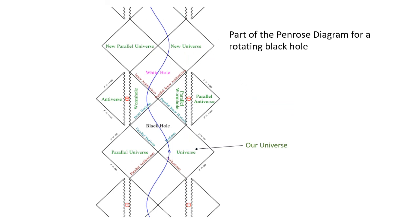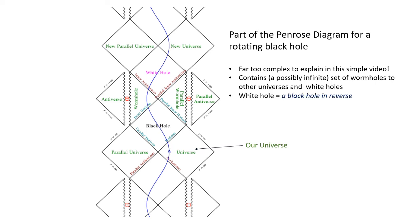What we've seen so far is a model of the simplest type of black hole. A small portion of the Penrose diagram for a rotating black hole is shown here. But it's far too complex to explain in this simple video. What happens behind the horizon of a rotating black hole is in fact unclear. The full Penrose diagram extends indefinitely and contains a possibly infinite set of wormholes to other universes and something called white holes. A white hole is a black hole in reverse. Matter can only leave a white hole and nothing can enter.